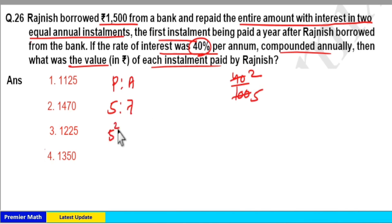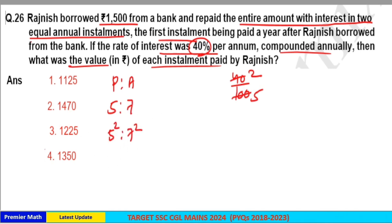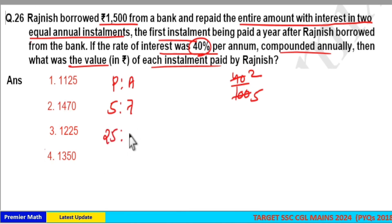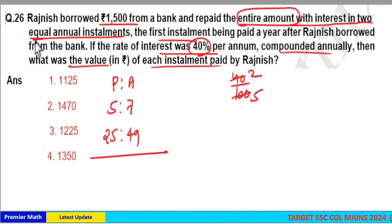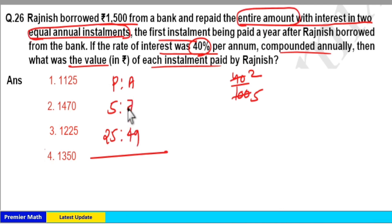For the second year, principal is 5 squared parts and amount is 7 squared parts, which equals 25:49. The question clearly states the entire amount is paid back in two equal annual instalments, which means we need to equalize the amount in the first year and the second year.